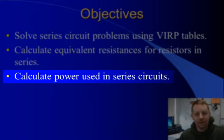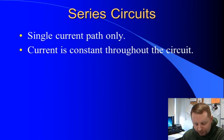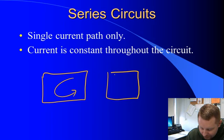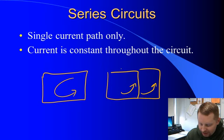What is a series circuit? A series circuit has a single current path only — a complete closed loop with one single path. That qualifies as a series circuit. If instead you have a couple different paths or branches where current can go in two possible directions, that's a parallel circuit. Today we're going to stick with series circuits.